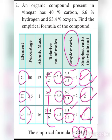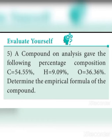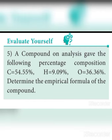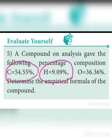The empirical formula is CH₂O. This is the empirical formula of acetic acid from vinegar. Next problem: a compound analysis gave the following percentage composition — carbon is 54.55%, hydrogen is 9.09%, and oxygen is 36.36%. Determine the empirical formula of the compound.